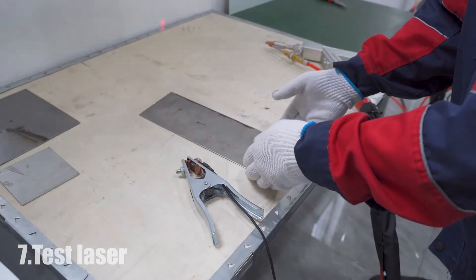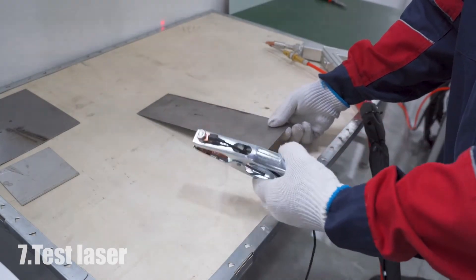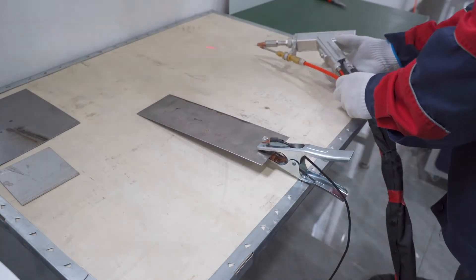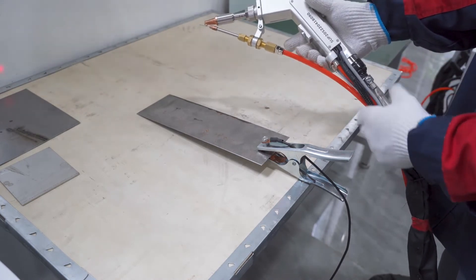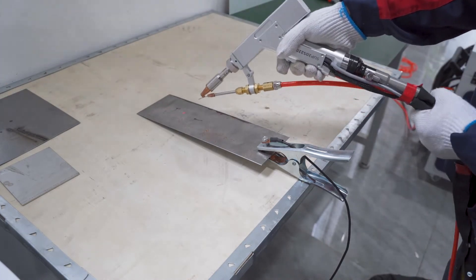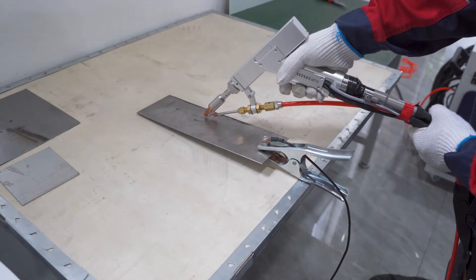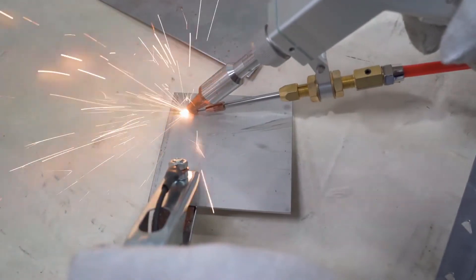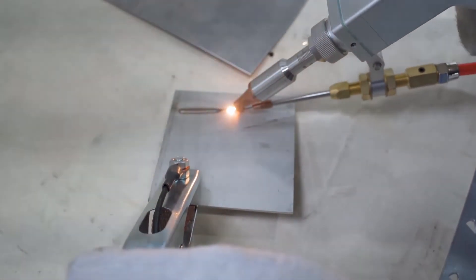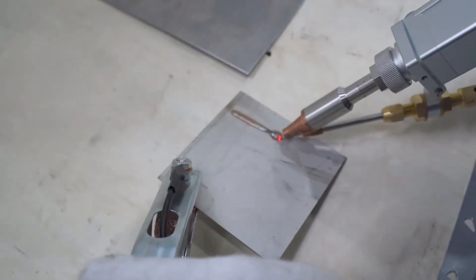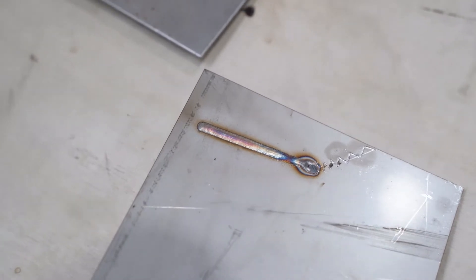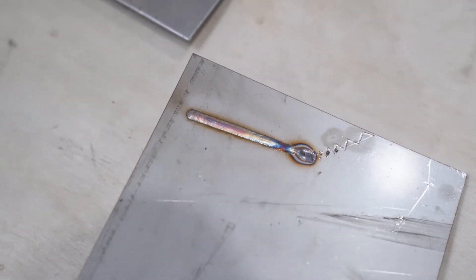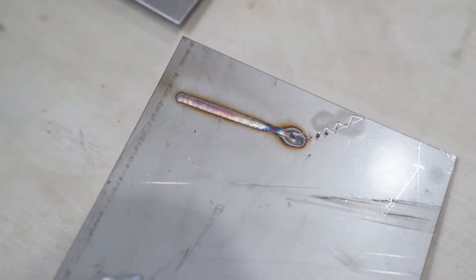Now we start to test the laser. First you need to connect the metal part with the protection device, then the laser will come on. You can see the welding lines are very beautiful. Then the laser focus is ready.